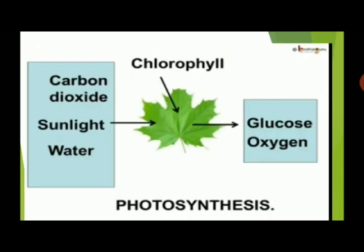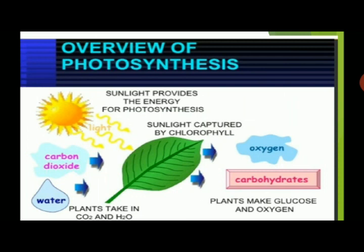The carbon dioxide gas enters the leaves of the plant through the stomata. Chlorophyll is a green pigment present in the cell organelle called the chloroplast. The green color of the plant is due to the presence of chlorophyll. Chlorophyll is present mostly in the green leaves of the plant. Chlorophyll traps the solar energy, which is used to synthesize food from carbon dioxide and water during the process of photosynthesis.